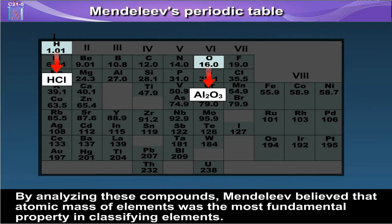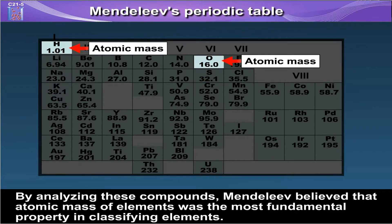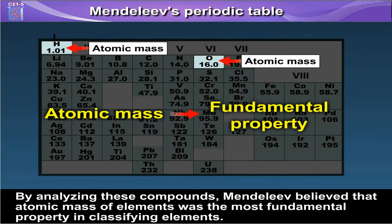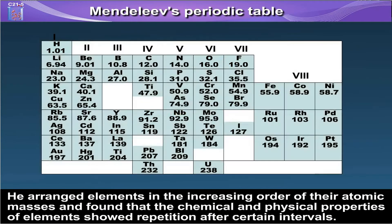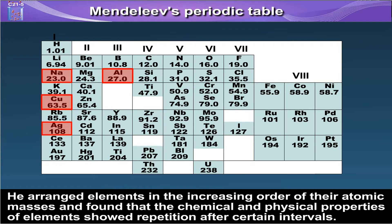By analysing these compounds, Mendeleev believed that atomic mass of elements was the most fundamental property in classifying elements. He arranged elements in the increasing order of the atomic masses and found that the chemical and physical properties of elements showed repetition after certain intervals.